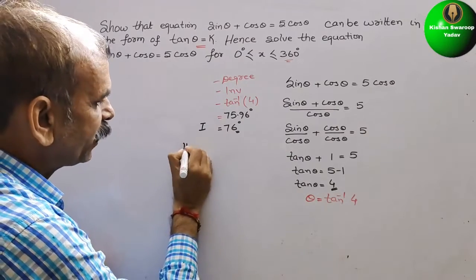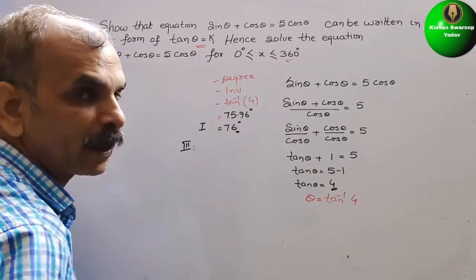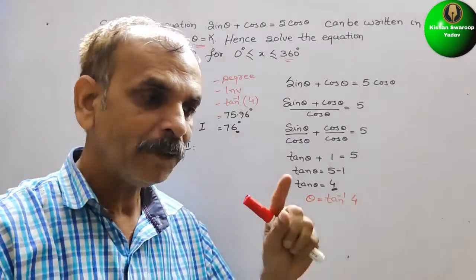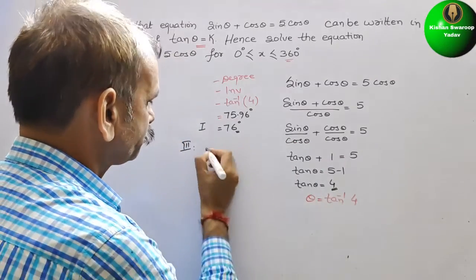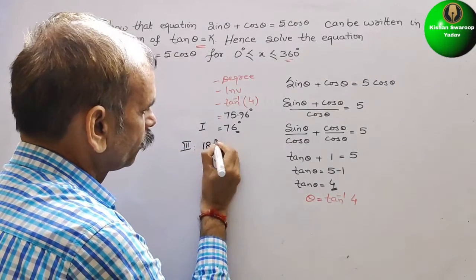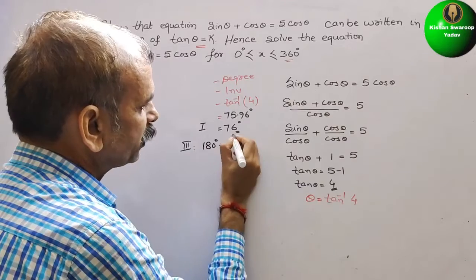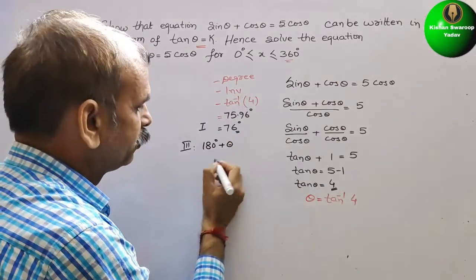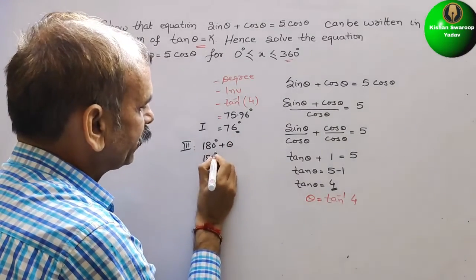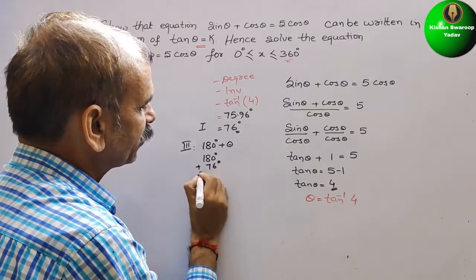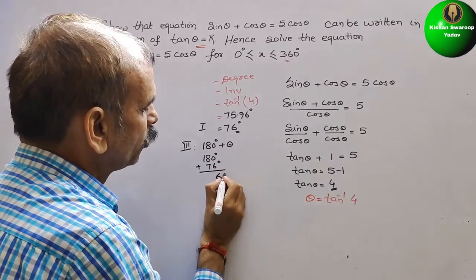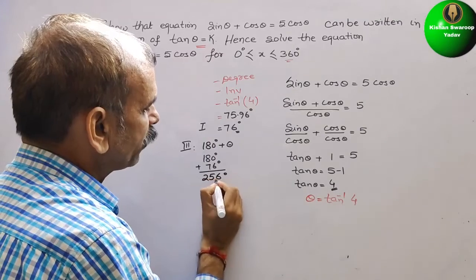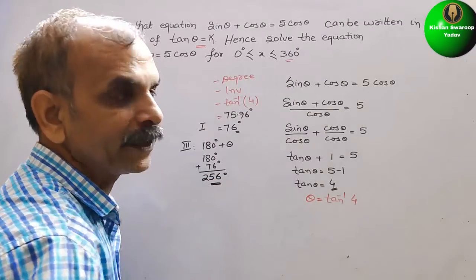And the third quadrant, how we will use to write 180 degree plus theta. So, this is nothing but your theta. So, we will write 180 degree plus 76 degree. That equals here comes 256 degree.